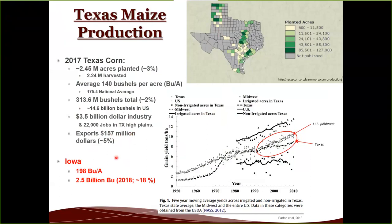To put this into perspective, Iowa averages about 200 bushels per acre and produces 2.5 billion bushels — 18% of the nation's production. Looking at the moving grain yield trend over the years, the Midwest is outproducing Texas, largely because more resources are being invested in improving varieties there. However, irrigated land in Texas does very well and has been increasing linearly over time.